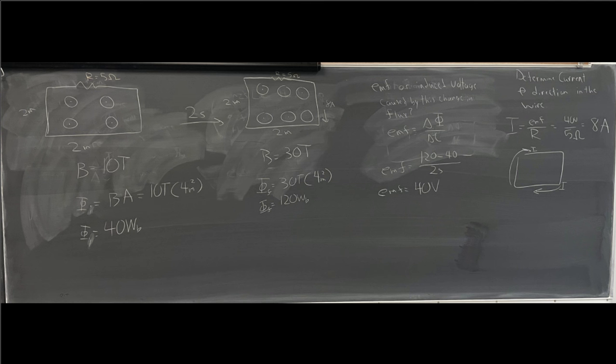Just doing a simple equation, we see that the magnetic flux goes from 40 webers to 120 webers, and over those 2 seconds causes an EMF of 40 volts. Now that's all good according to Faraday's law.